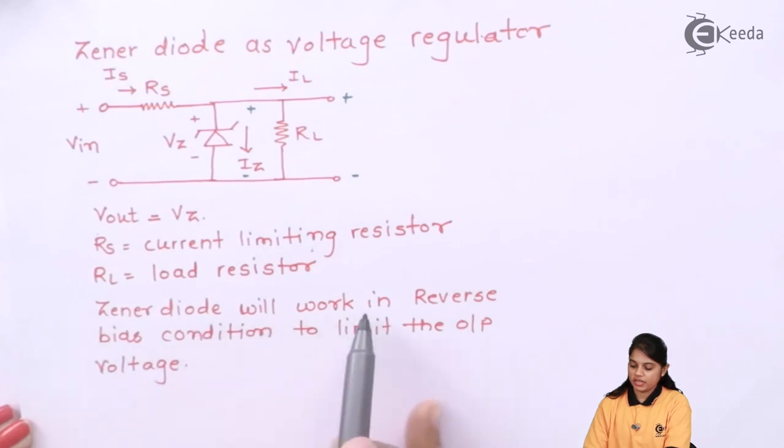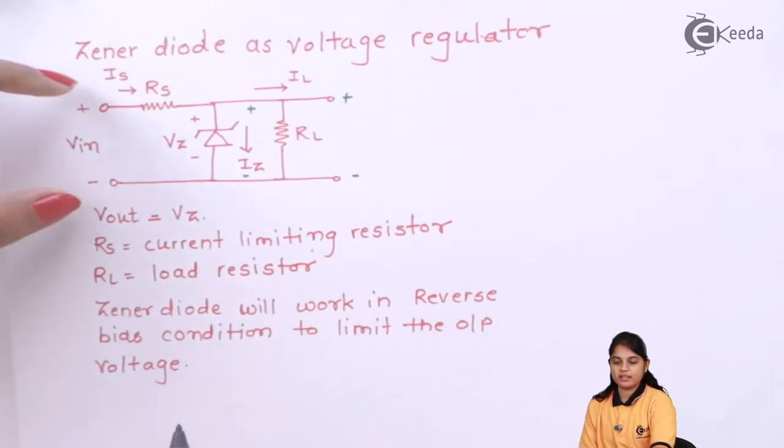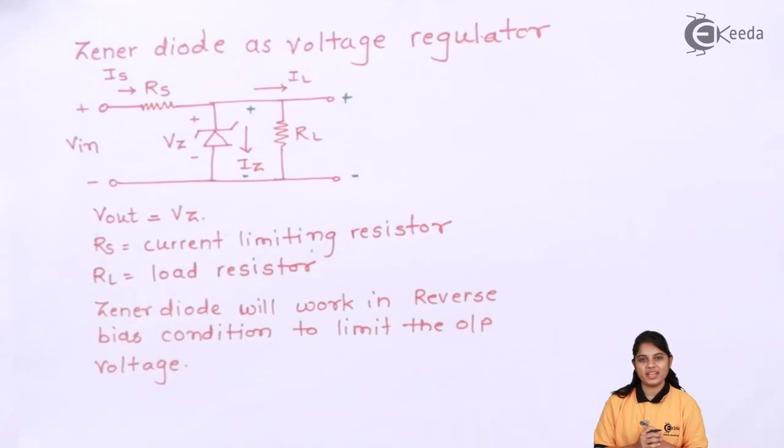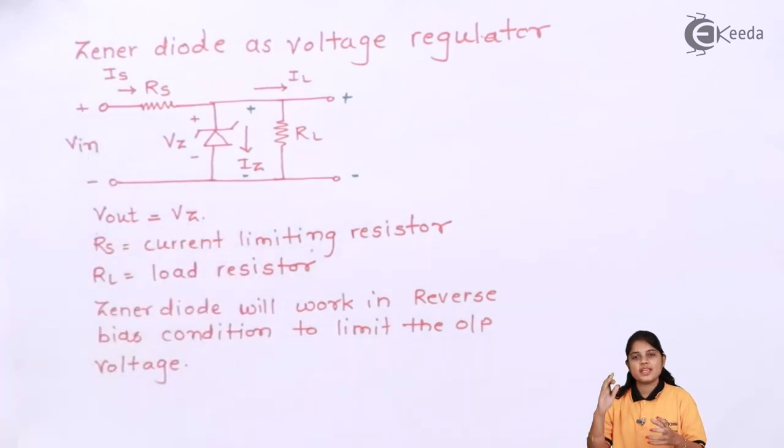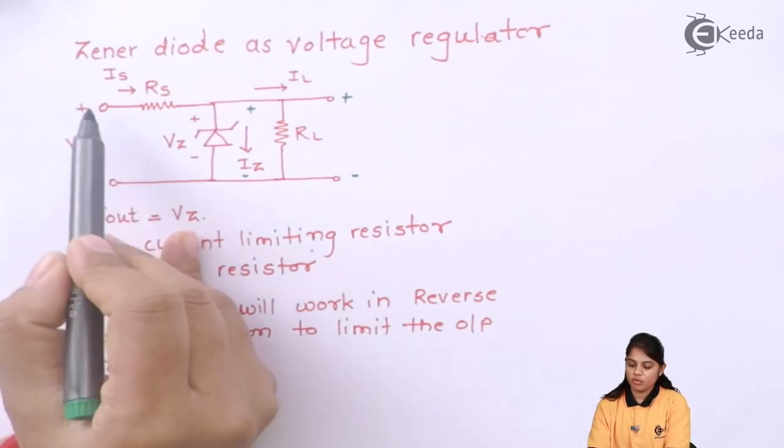Your Zener diode will work in a reverse bias condition to limit the output voltage. If you take this circuit for a practical purpose, if you connect actually the resistance, Zener diode, and everything together on a breadboard and if you apply a voltage, when you plot a graph, you will actually see how it works in a reverse bias condition.